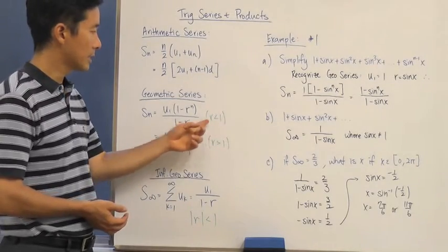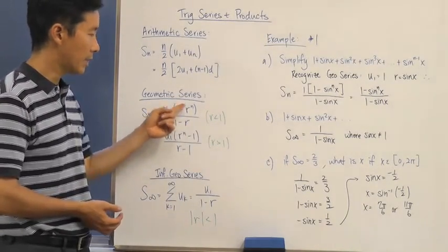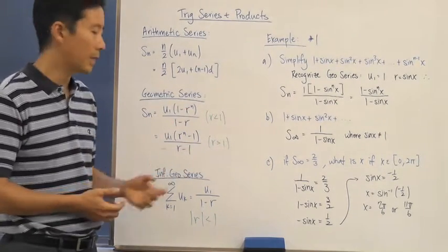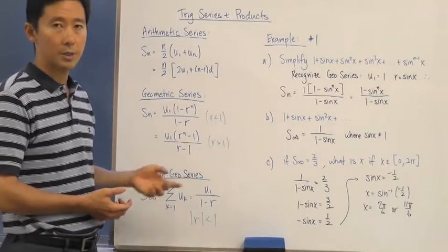So if r is less than 1, then we're using this one so that we can keep everything positive. And if r is greater than 1, we're going to use this one again so that we can keep this fraction or this portion positive.